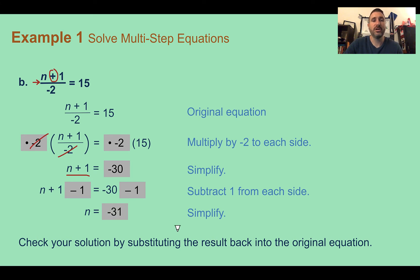And again, let's check to make sure we get the right answer. So I'm going to do my work over here. Negative 31 plus 1, all divided by negative 2. Does that equal 15? Negative 31 plus 1 is negative 30. Divided by negative 2. 30 divided by 2 is 15. Negative divided by negative is positive, so 15 equals 15, yes.